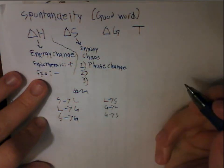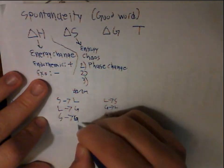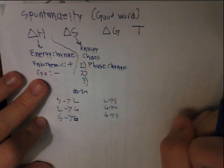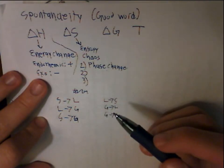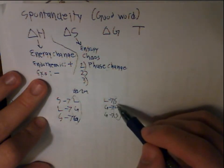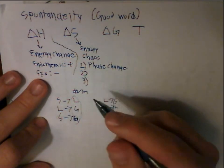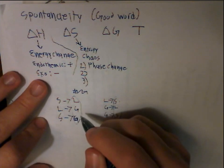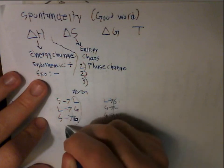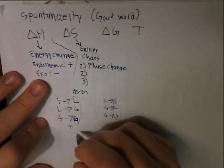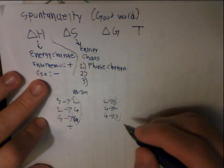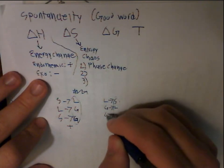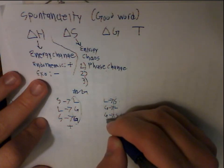Sublimation and deposition are much more uncommon — the best example of solid to gas is dry ice, which instantly turns to gas. What delta S is measuring is whether the new state is more chaotic. Solids don't move much; liquids move more, so they're more chaotic; gas moves around a lot more, even more chaotic. So phase changes that go toward gas mean more chaos, and toward solid mean less chaos — liquid to solid is movement to no movement, and so on.